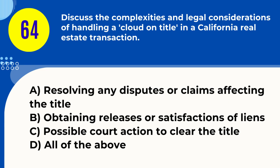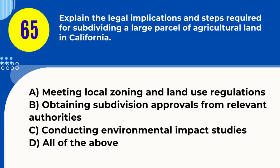Question 64. Discuss the complexities and legal considerations of handling a cloud on title in a California real estate transaction. A. Resolving any disputes or claims affecting the title B. Obtaining releases or satisfactions of liens C. Possible court action to clear the title D. All of the above. Answer: D. All of the above. Explanation: Addressing a cloud on title may involve resolving disputes, clearing liens, and legal action to ensure a clear title.